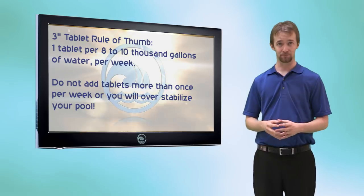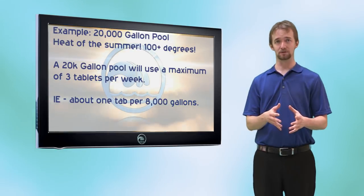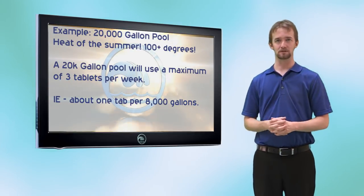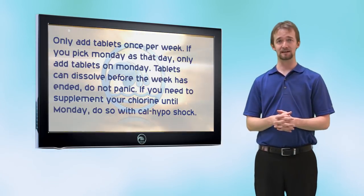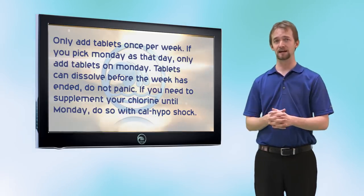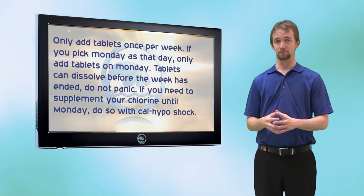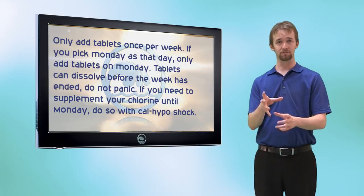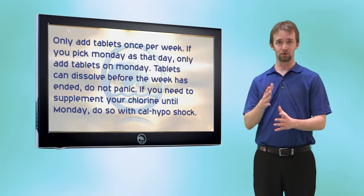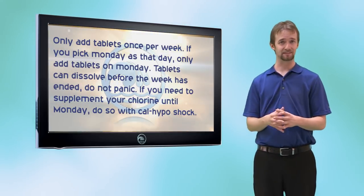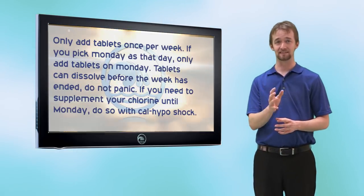For example, a 20,000-gallon pool in the heat of summer is only going to use a maximum of three tablets per week. When adding chlorine tablets, only add them once a week — pick a day like Monday and add your tablets then. If Thursday comes along and the tablets are gone, you don't need to add more. Just because the tablets aren't in the feeder doesn't mean the chemical isn't in the pool water. Pick a day to add your chlorine tablets and stick to that day only.